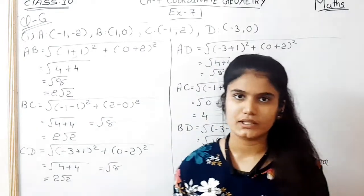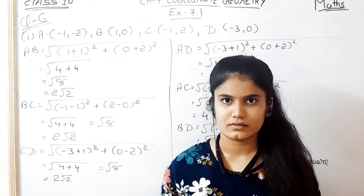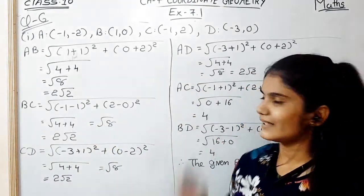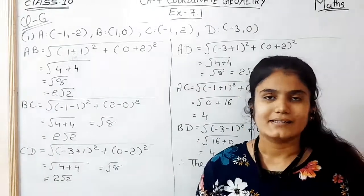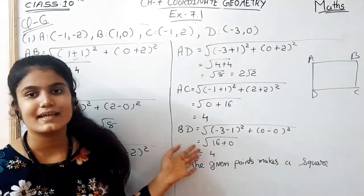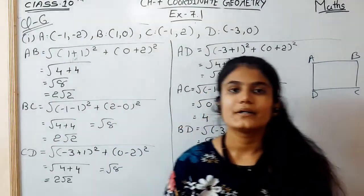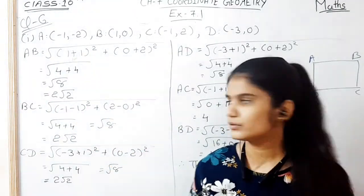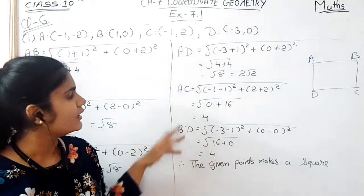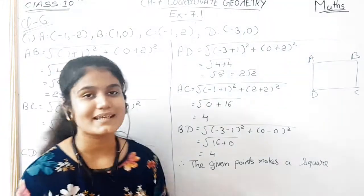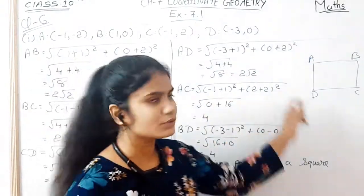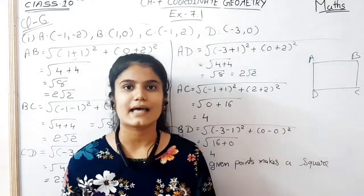In question number 6, four points are given with their coordinates. We have to find which quadrilateral they make and give reasons. For sub-part 1, we find the distances AB, BC, CD, and AD using the distance formula and all four are equal to √2. Then the diagonals AC and BD are both equal to 4. Since all four sides are equal and both diagonals are equal, the given points form a square.